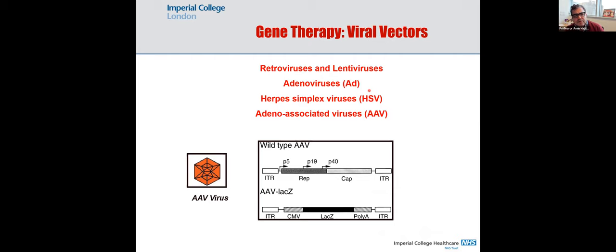Retroviruses and lentiviruses are integrating viruses, but the problem is they can activate proto-oncogenes by integrating upstream of them, causing cancer and death in children. Then adenoviruses were used as vectors since they don't integrate — but they are highly inflammatory, which caused the death of Jesse Gelsinger in the late 90s when he was treated for a genetic hepatic disease. Herpes simplex viruses were used to generate vectors because they can get into the brain. Now adeno-associated viruses (AAV) are mainly used because they are not pathogenic.